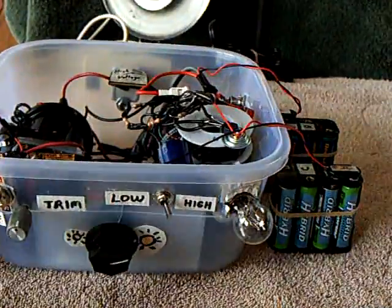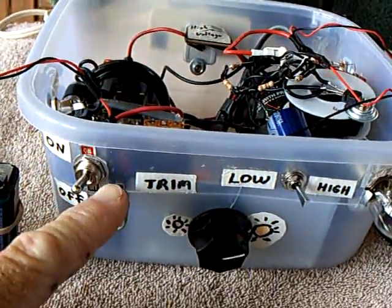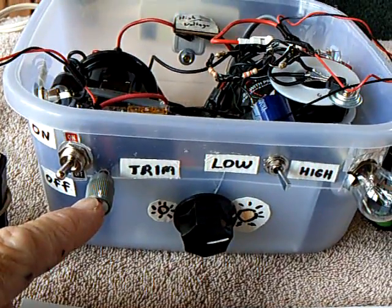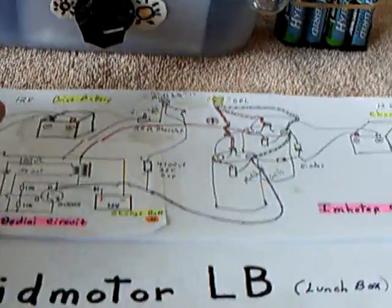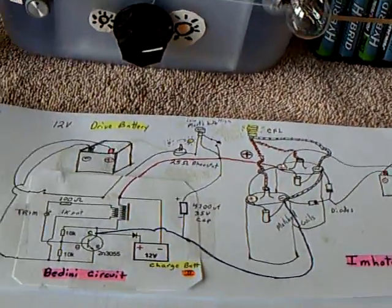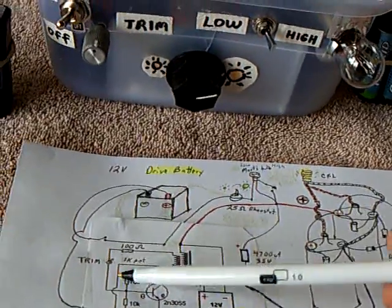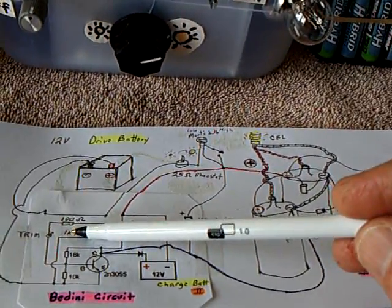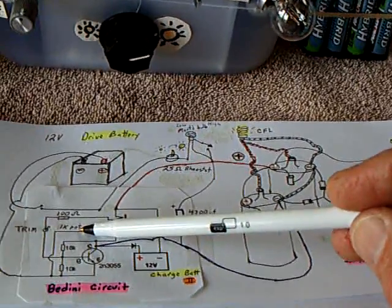Basically, the trimmer switch was a big important thing that went in where that 2K pot was in the original diagram. And that pot right there, I'm actually using a 1K pot right now.